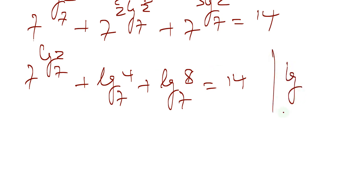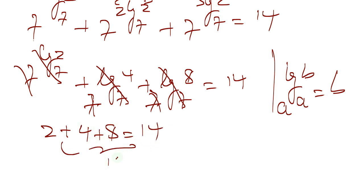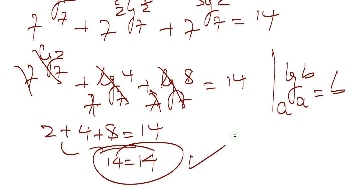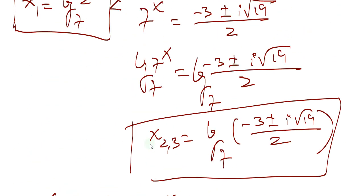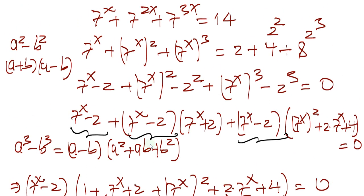Using the property that a to the (log base a of b) equals b, this gives us 2 plus 4 plus 8 equals 14, which is 14 equals 14. So this is correct! Thank you for watching, guys. Please subscribe to the channel. Let me know in the comments what you think about this solution and how you would proceed to solve it.